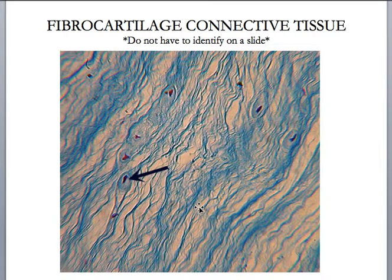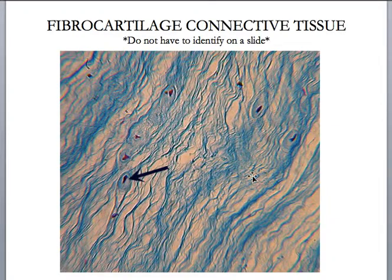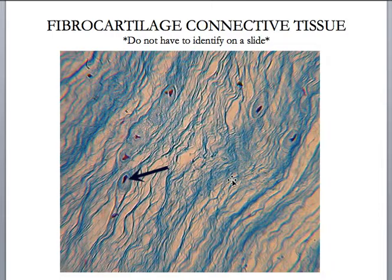Fibrocartilage. You don't have to identify it on a microscope slide, but you should be able to tell me location and function. You find fibrocartilage in between the bodies of the vertebrae — these are called intervertebral discs. Your vertebrae are the bones that make up your backbone and house and protect the spine. Having these intervertebral discs made up of fibrocartilage means that when you're standing, walking, or jumping, you don't have bone grinding on bone in your vertebral column — the bones are separated by this fibrocartilage. Its function is to absorb shock.